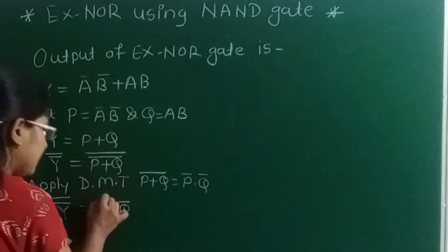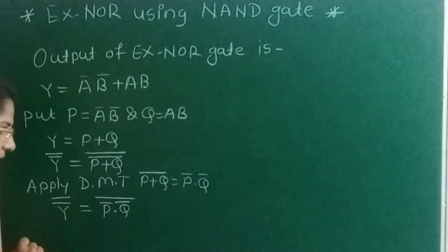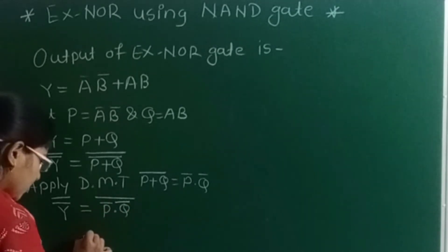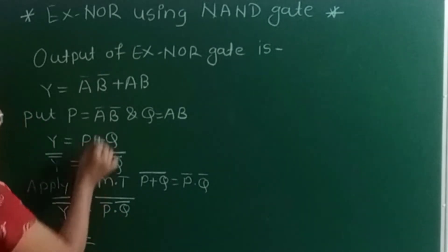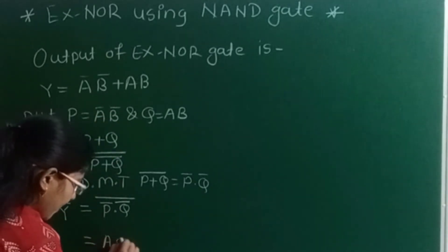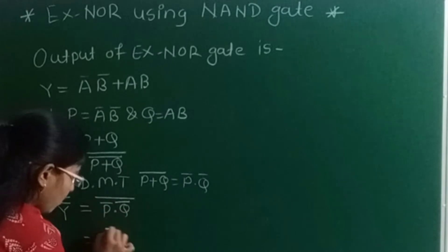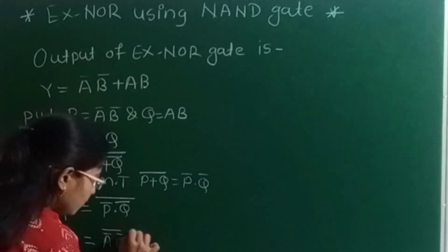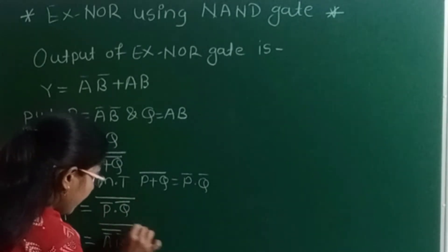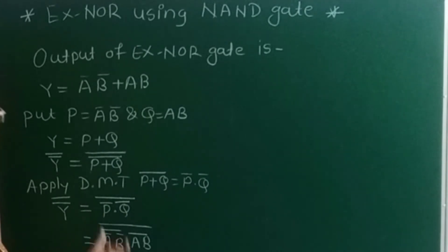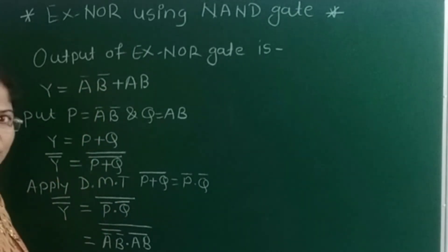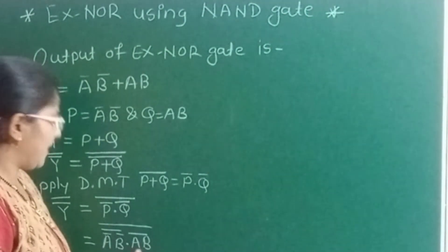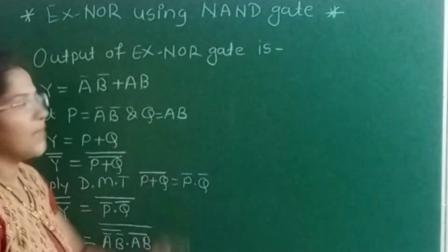This upper complement is still remaining. Now put the values of P and Q back into the expression. P is nothing but A'B', so I write A'B' and its complement dot. Q is nothing but AB but I want Q', so its complement, and this upper complement will remain as it is. So actually this expression is nothing but the output of the XNOR gate, but now product terms and complement are present, so I can design this expression by using the NAND gate.